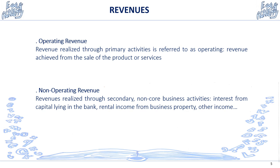There are actually two types of revenue. Operating revenue, by far the most important, is the revenue realized through primary activities — referred to as operating revenue — fees from the sales of products or services, sometimes simplified as price multiplied by quantity of goods or services. Non-operating revenue doesn't exist all the time, because not all companies have it: revenues realized through secondary non-core business activities, such as interest from capital in the bank or rental income from business property.